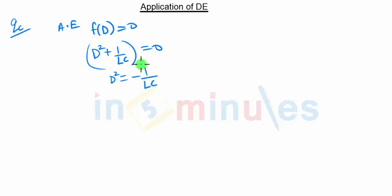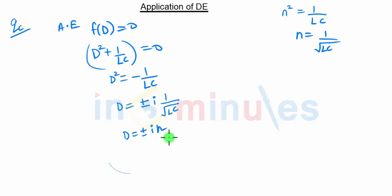This is the square root of a negative term, so it is complex. So D will be ±i√(1/LC). But we are given n² = 1/LC, so n = 1/√(LC). So this is D = ±in. This is our complex root.